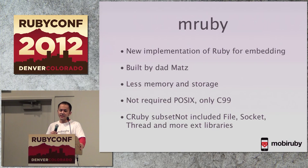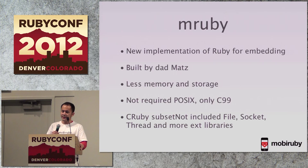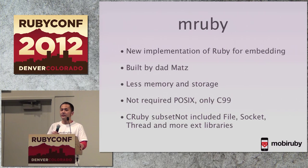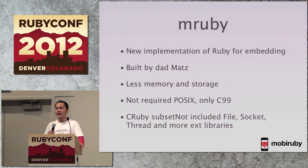mRuby supports multiple virtual machines — CRuby does not support that yet. However, mRuby has many limitations. mRuby is built on ISO specifications, which means it does not support threads and many classes. Almost all Ruby standard libraries are not supported, so RubyGems is not supported. And mRuby is still in alpha — sometimes I find mRuby bugs.